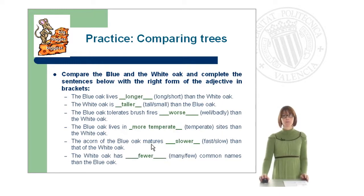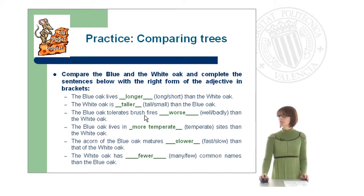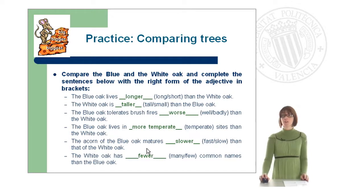Here are the solutions. The blue oak leaves are longer than the white oak. The white oak is taller than the blue oak. The blue oak tolerates grass fires worse than the white oak. The blue oak lives in more temperate sites than the white oak. The acorn of the blue oak matures slower than that of the white oak. The white oak has fewer common names than the blue oak. And this is all for today — thank you very much.